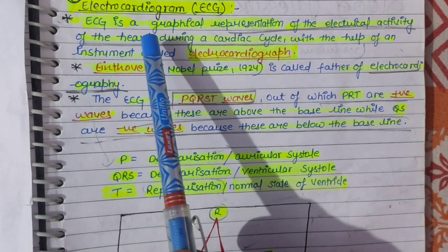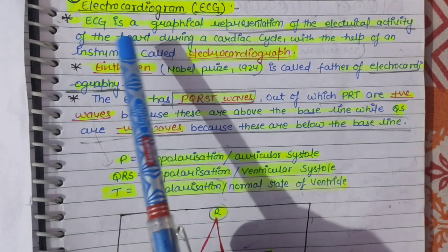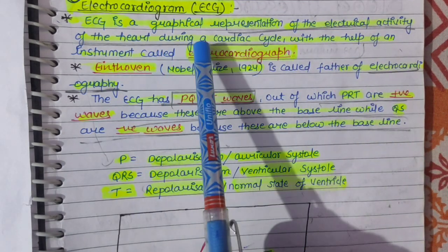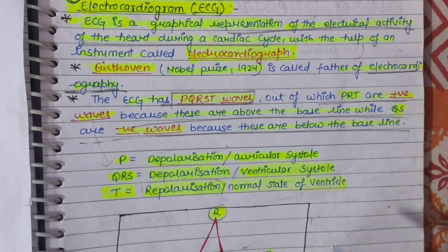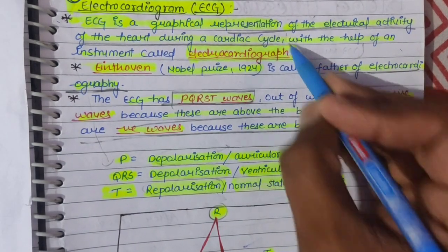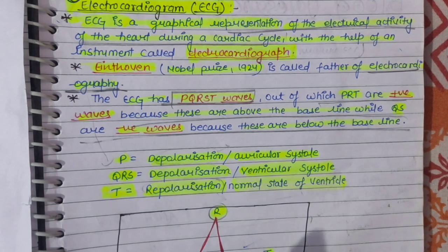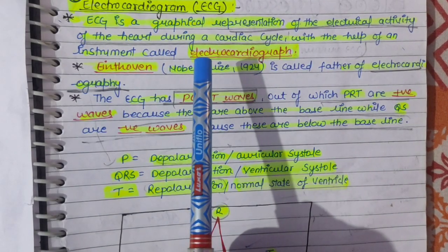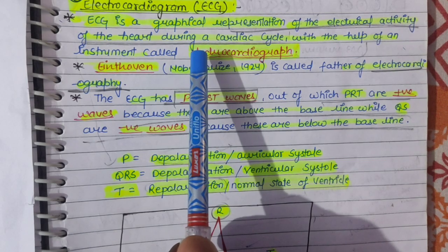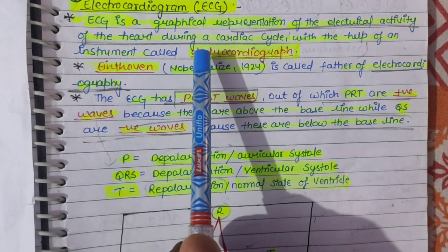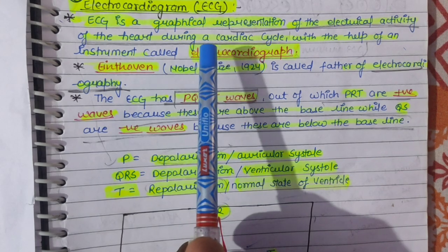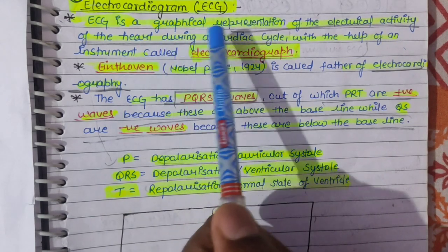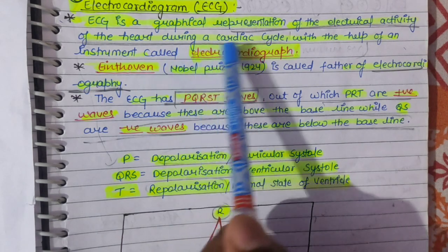If you ask what do you mean by the term ECG — ECG is the graphical representation of the electrical activity of the heart during the cardiac cycle.